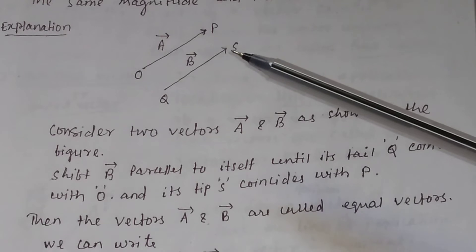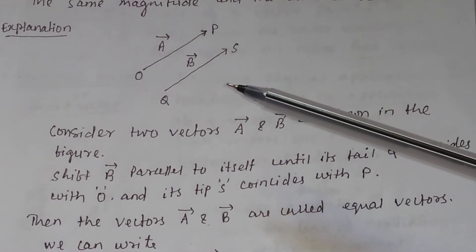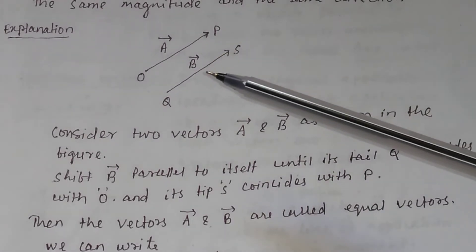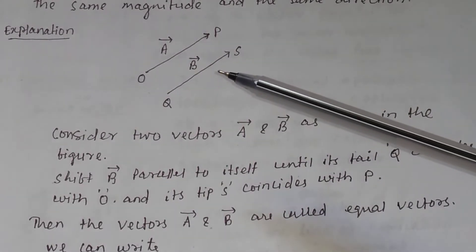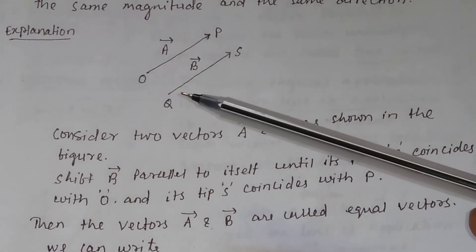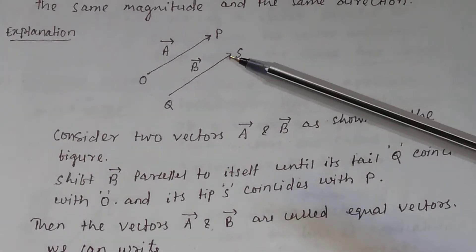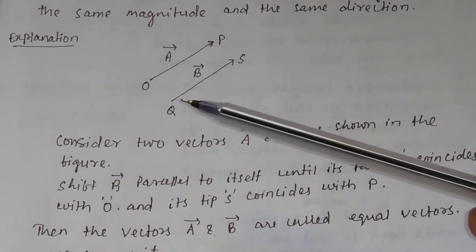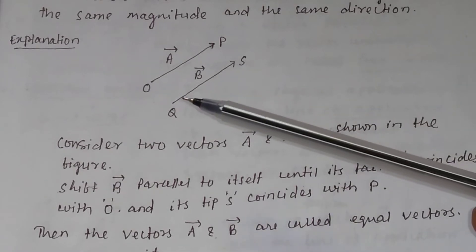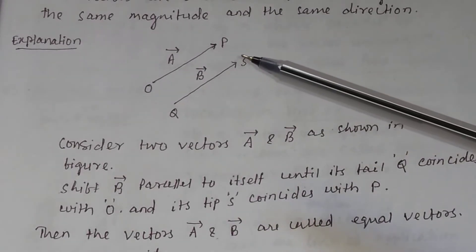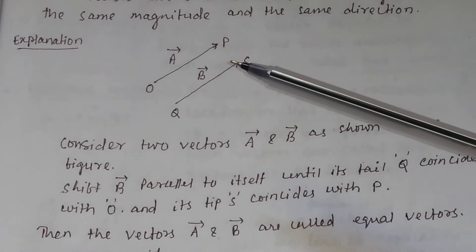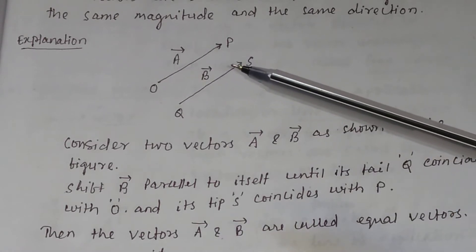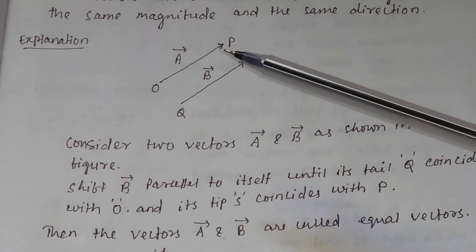As shown in the figure, consider two vectors A and B. This is vector A and this is vector B. If you shift vector B parallel to itself, such that the tail Q — this is the tail of the vector and this is the tip of the vector — the tail Q coincides with the point O and the tip S coincides with the point P.